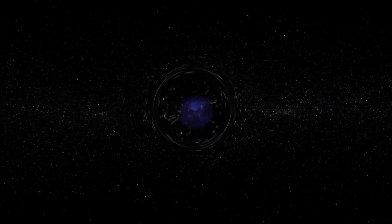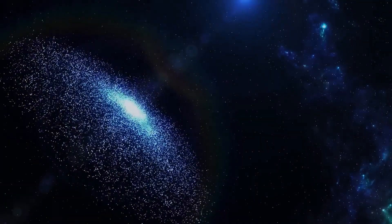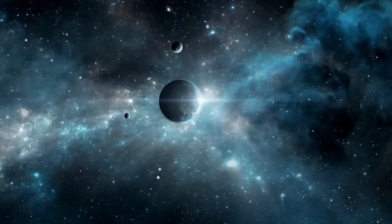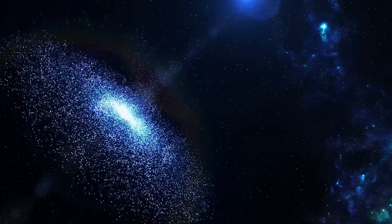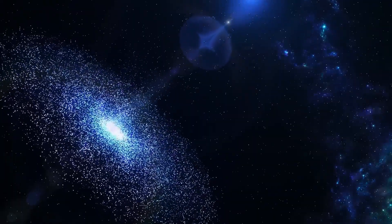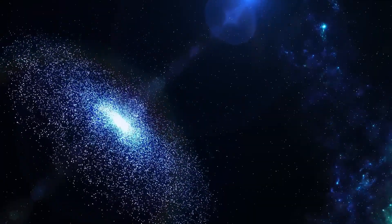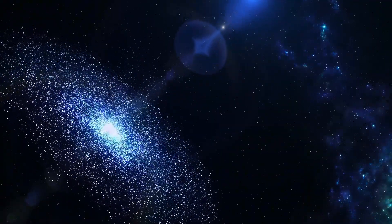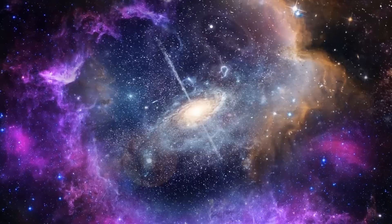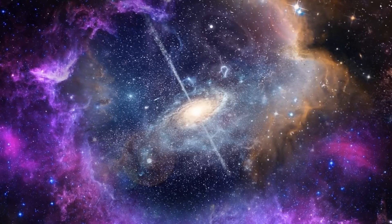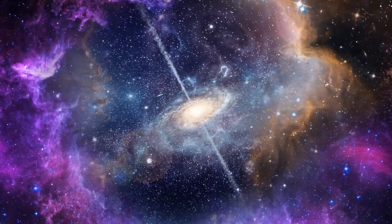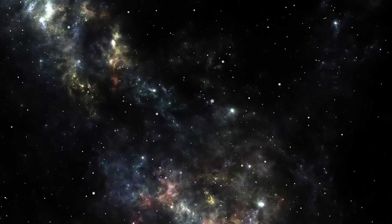But what could create such a massive scale preference? In our everyday experience, objects rotate because some force set them spinning. We see this in everything from ice skaters pulling in their arms to gas clouds collapsing under gravity. The conservation of angular momentum ensures that any initial rotation gets amplified as objects shrink, but it doesn't explain why the universe itself might have a preferred spin direction. The answer might lie in the most extreme objects known to physics: black holes that rotate with incredible speed and possess the power to influence space and time itself across vast distances.